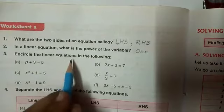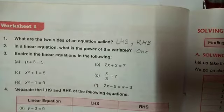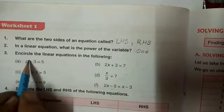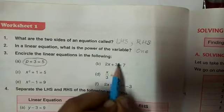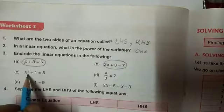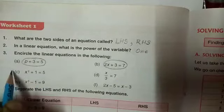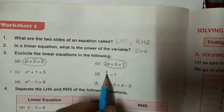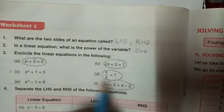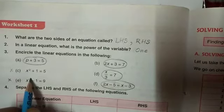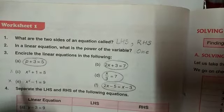Now, we are to encircle the linear equation. In this power of the variable is 1, so we will encircle this. 2x, again the power is 1. Here, x raised to power 2, we will not encircle. Here, x is 1. Again, here also. And there, x raised to power 3, so it is not a linear equation.